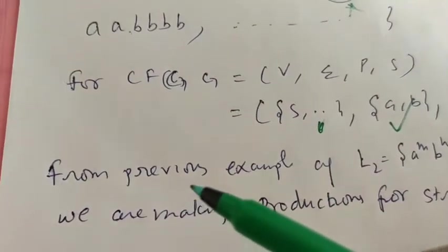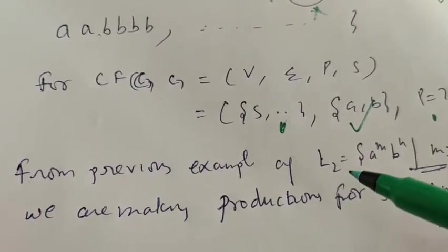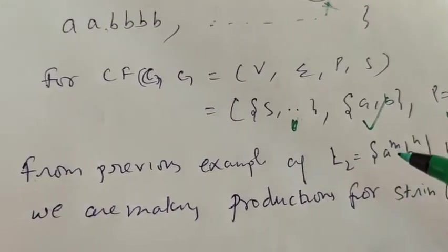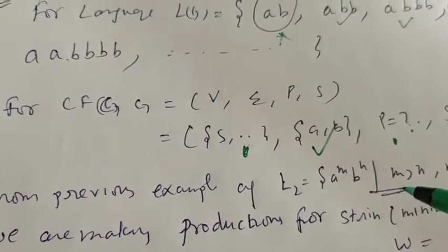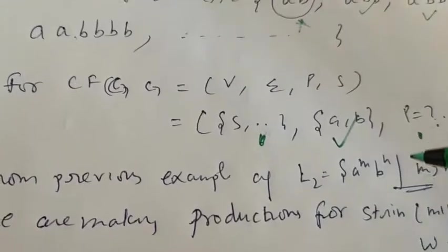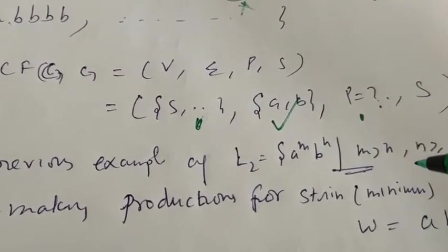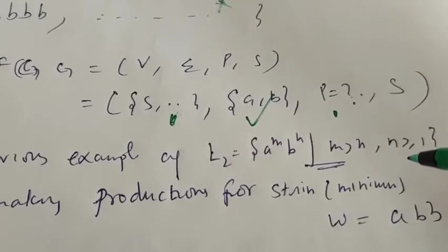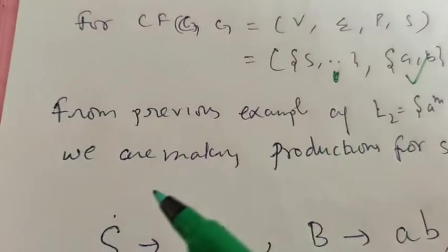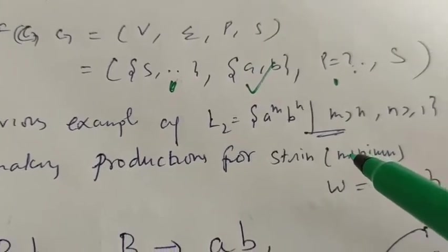Now from previous example of our question, that language L2 is equal to a to the power n, b to the power n, m is greater than n. Here m is less than n, see the difference. So the construction will be similar type but the nature is different. And then n greater than or equal to 1. So we are making production for the string which is the minimum string.